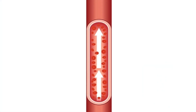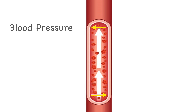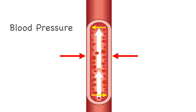Take this blood vessel for example. In arteries, blood is going to flow in one direction — in this case, away from the heart. As blood passes through the vessel, it exerts pressure on the walls of the vessel. This is what we call blood pressure. The resistance offered by the blood vessel to the flow of blood is what we call vascular resistance.